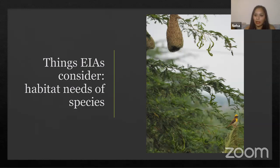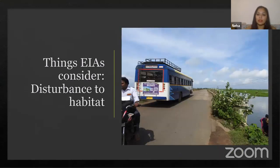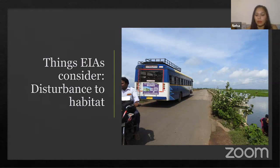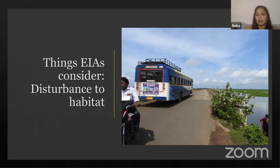We're trying to understand the site, the species present, and whether we can go ahead with the project. EIAs also consider disturbance to habitat — this picture shows a road built on top of a wetland, partly filling it up. A project also brings pollution, noise, invasive species, and ancillary industries. All of that needs to be considered — this is how an EIA is supposed to perform its function.